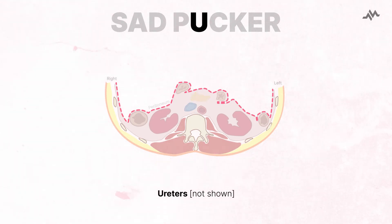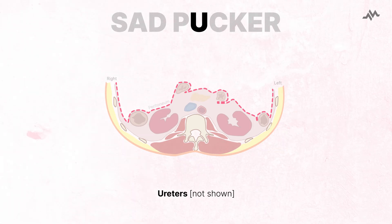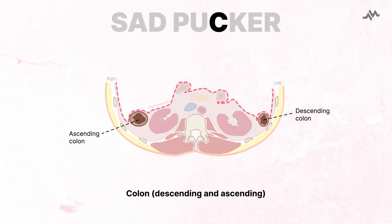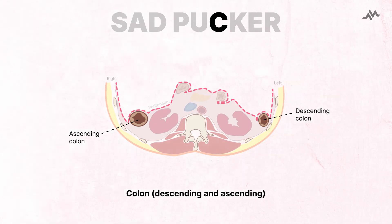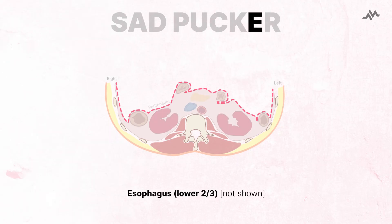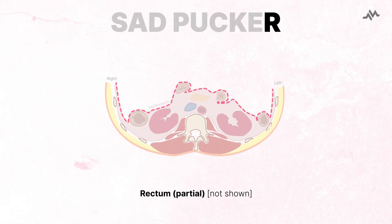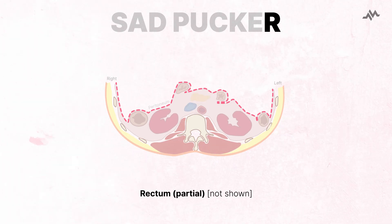U stands for ureters, which are not labeled on this diagram, but are the organs that lead from the kidneys to the bladder. C stands for the descending and ascending portions of the colon. K stands for kidneys. E stands for the lower two-thirds of the esophagus. And R stands for rectum — at least parts of the rectum — also not labeled on this diagram.